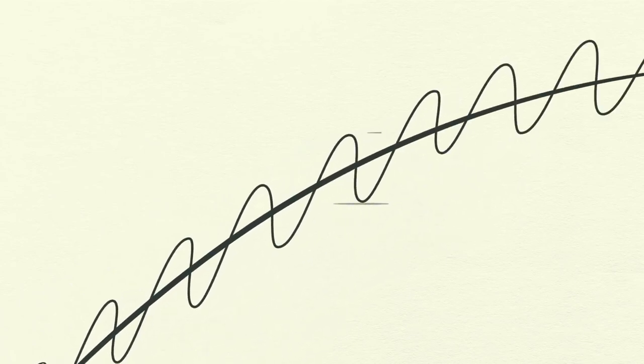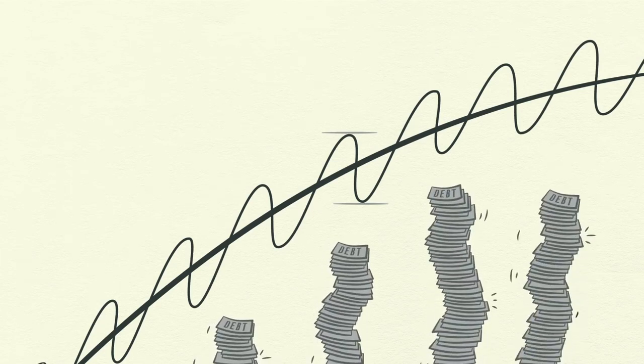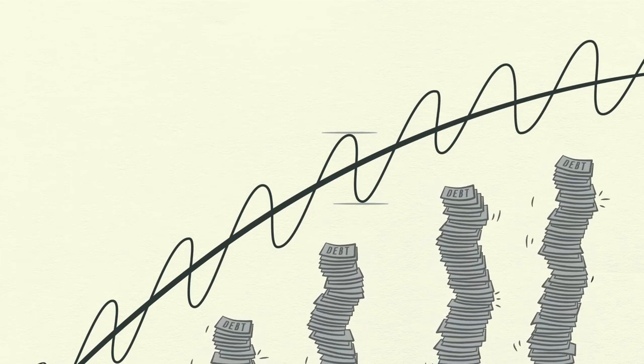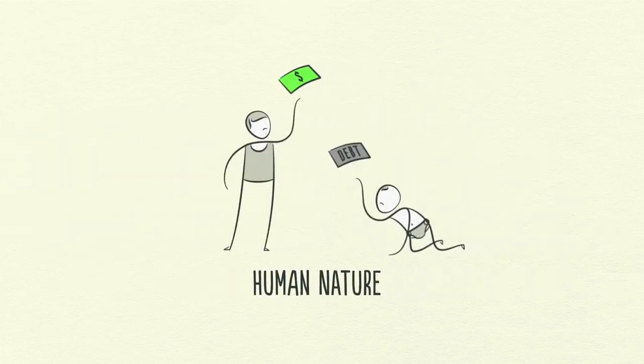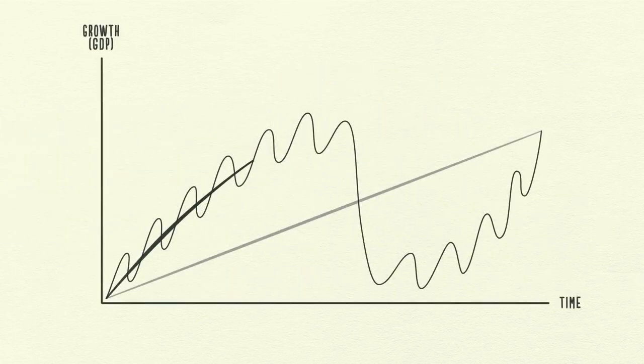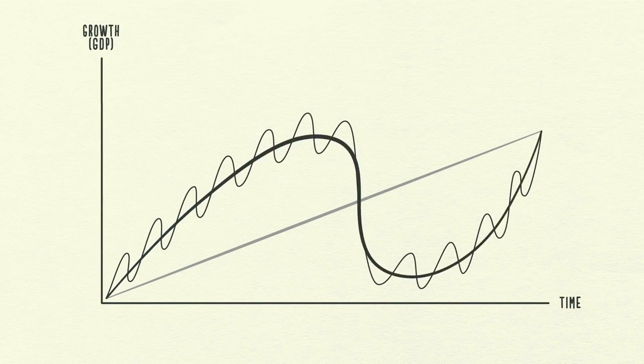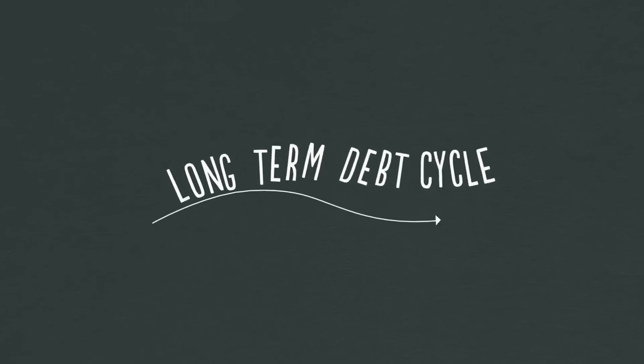But notice that the bottom and top of each cycle finish with more growth than the previous cycle and with more debt. Why? Because people push it. They have an inclination to borrow and spend more instead of paying back debt. It's human nature. Because of this, over long periods of time, debts rise faster than incomes, creating the long-term debt cycle.